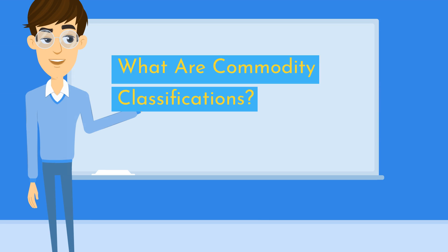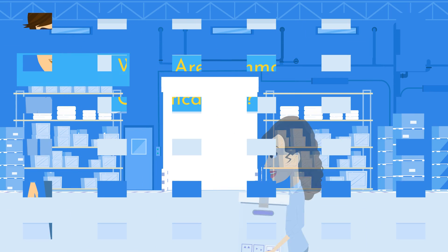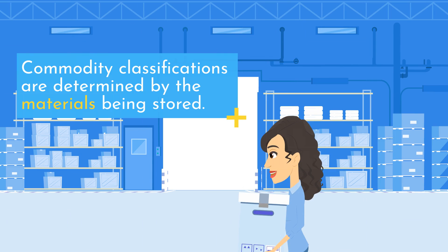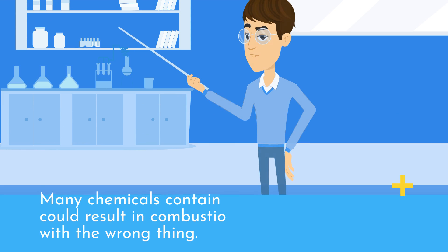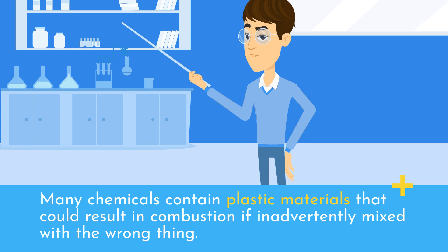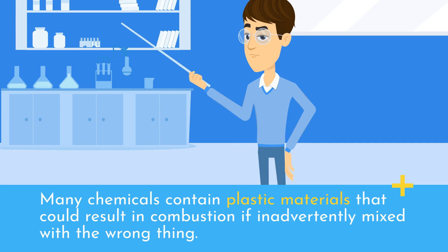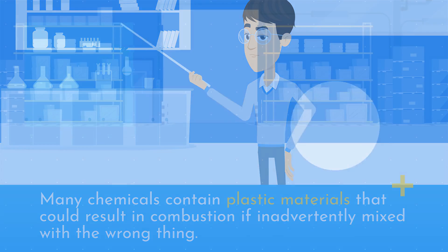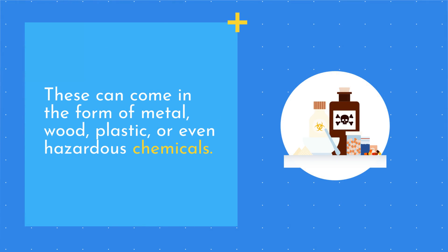What are Commodity Classifications? Commodity classifications are determined by the materials being stored. Many chemicals contain plastic materials that could result in combustion if inadvertently mixed with the wrong thing. These can come in the form of metal, wood, plastic, or even hazardous chemicals.